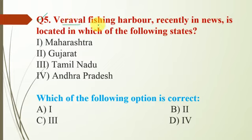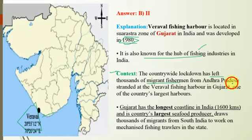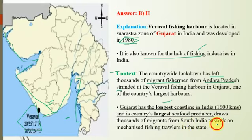Question number 5: Veraval fishing harbor, recently in the news, is located in which state? The correct answer is Gujarat, so option B. Veraval fishing harbor is located in the Saurashtra zone of Gujarat and was developed in 1980. It is known as the hub of the fishing industry in India. The context is that the nationwide lockdown left thousands of migrant fishermen from Andhra Pradesh stranded at this harbor. Gujarat has the longest coastline in India and is the country's largest seafood producer.